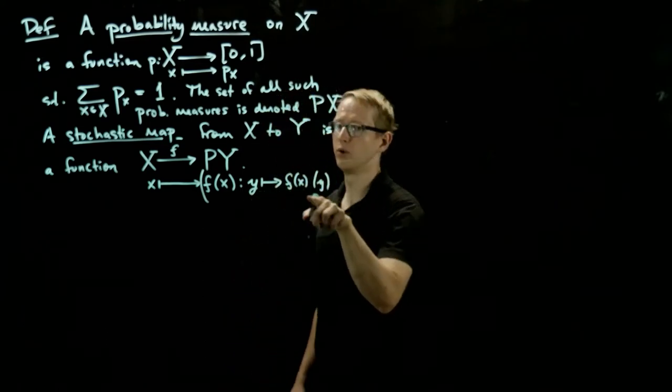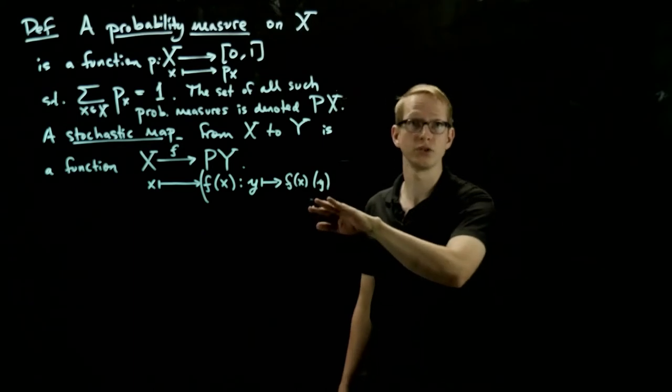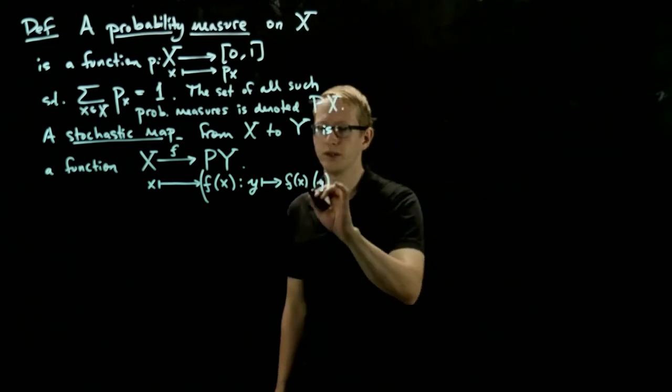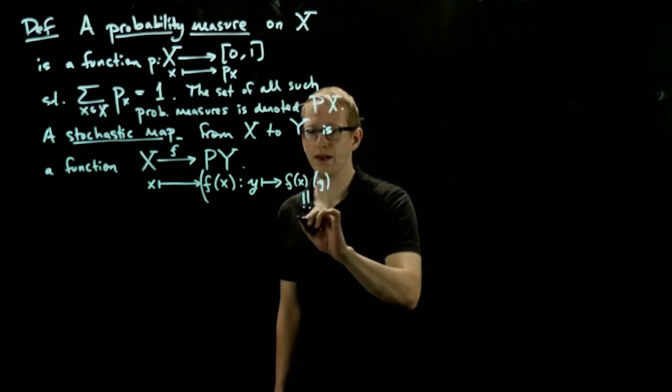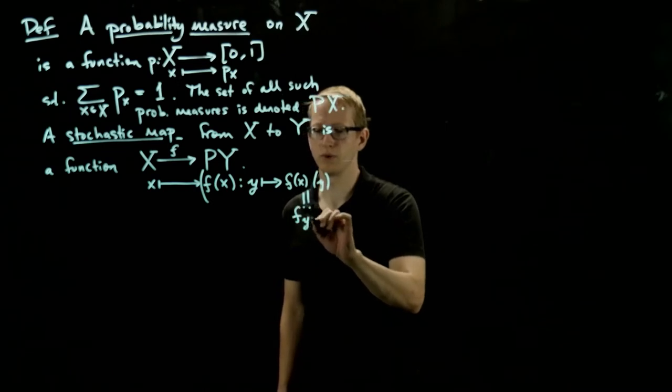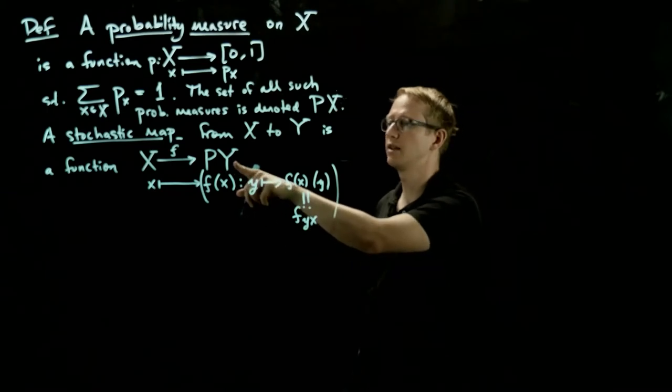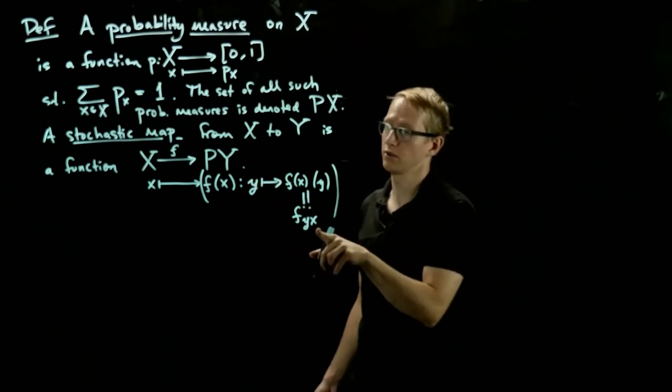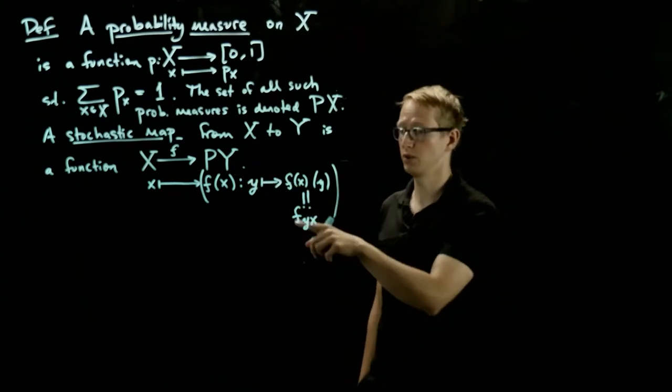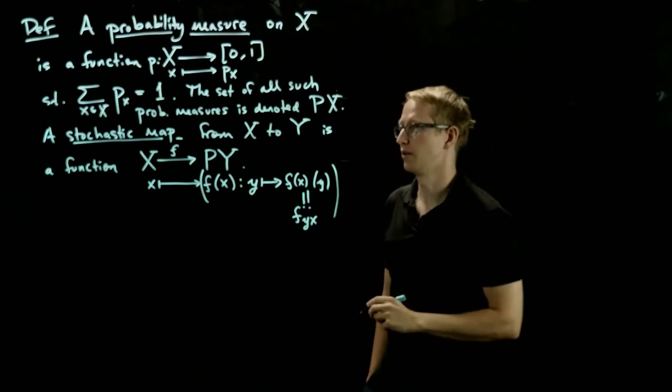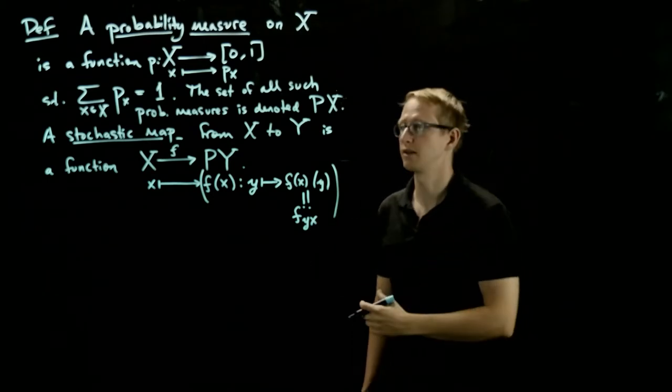Now, it's a little bit annoying to write something like this and potentially confusing. So instead of writing this, we will write f subscript yx. The reason we write the y on the left is because we will end up in Y and x on the right because we started in X. We'll see why this is convenient in a moment when we talk about composition of stochastic maps.